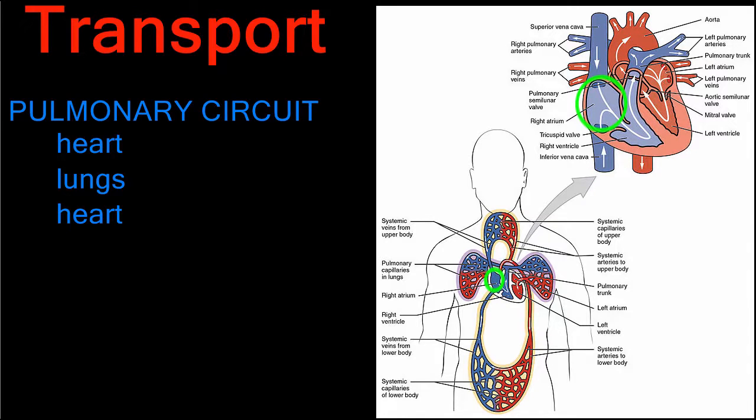From the right atrium, the blood flows into the right ventricle. The right ventricle pumps the blood through the pulmonary arteries away from the heart to the lungs. Within the lungs, arteries branch to become arterioles and then capillaries.